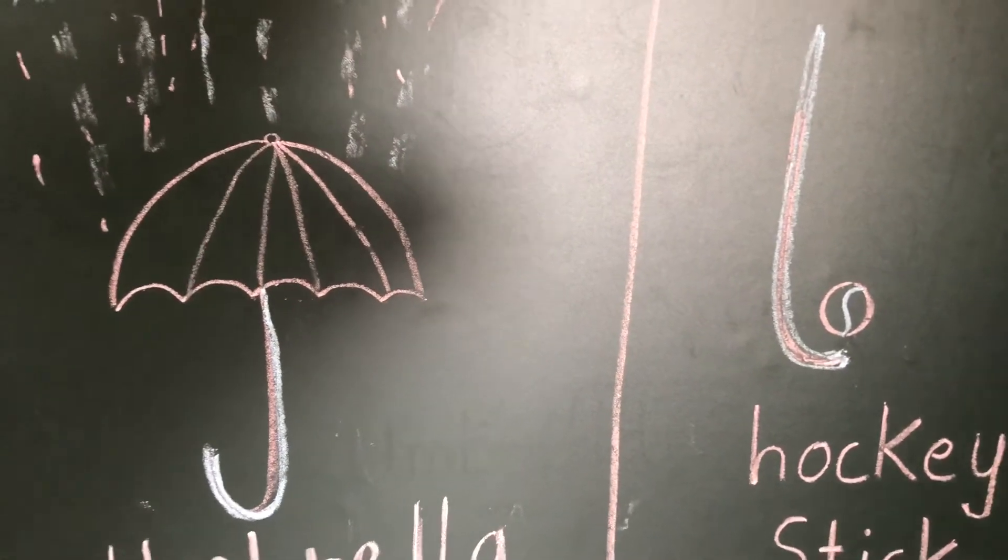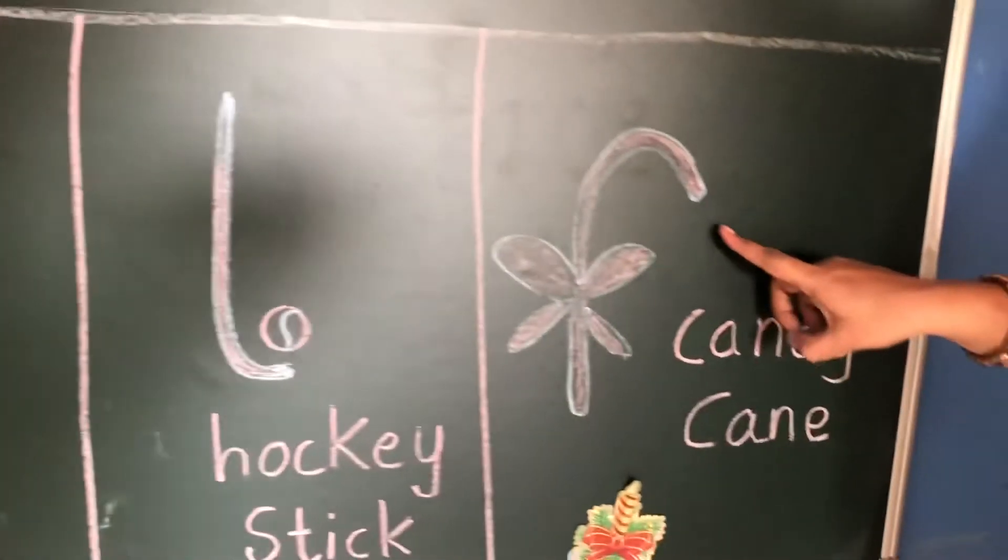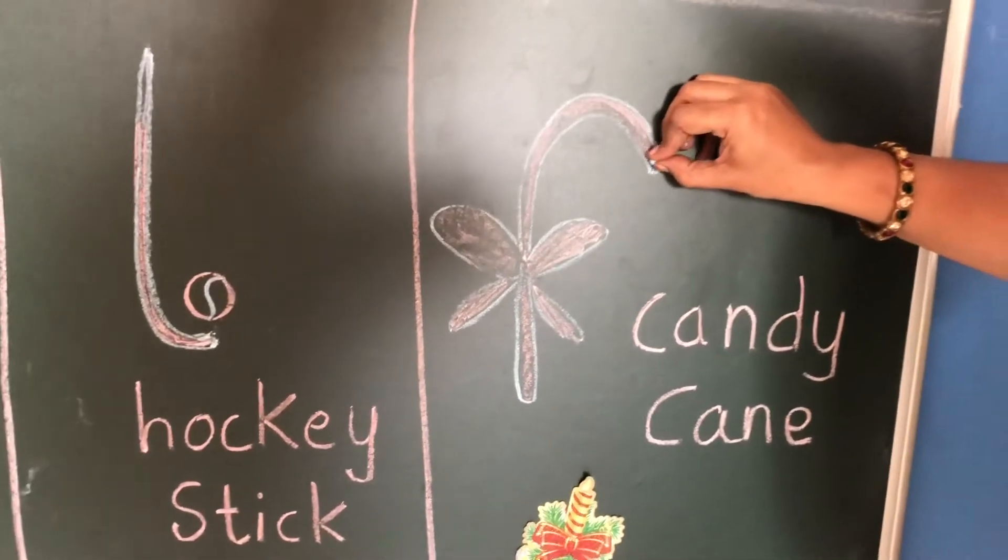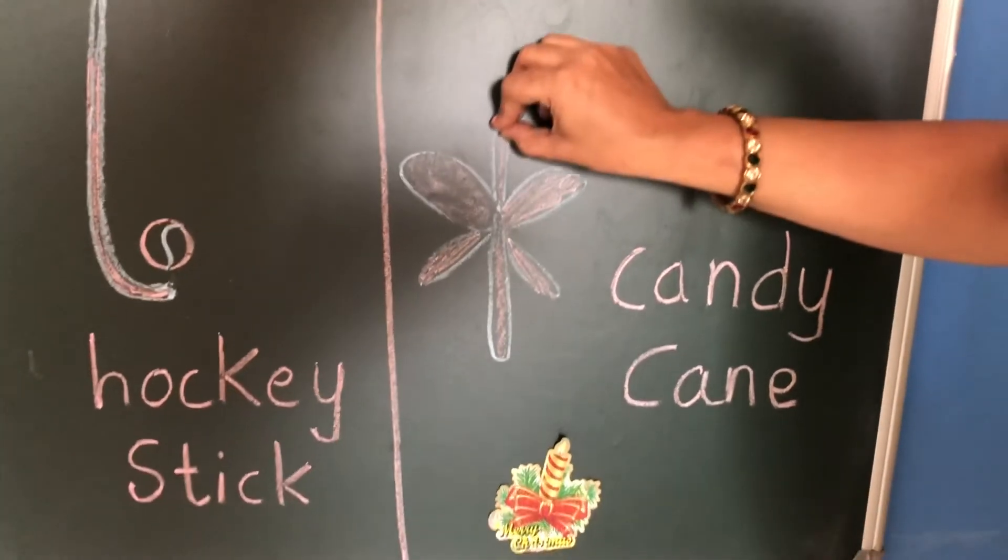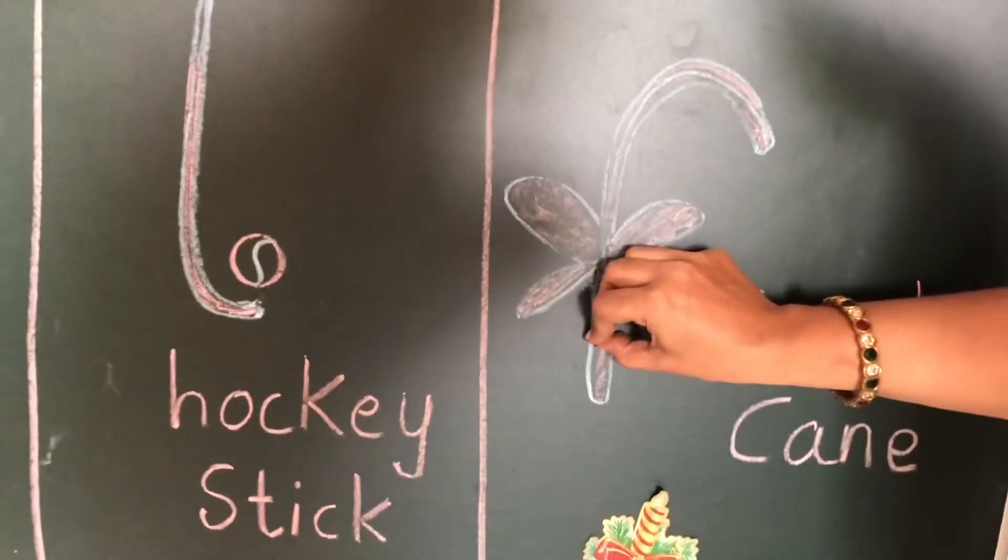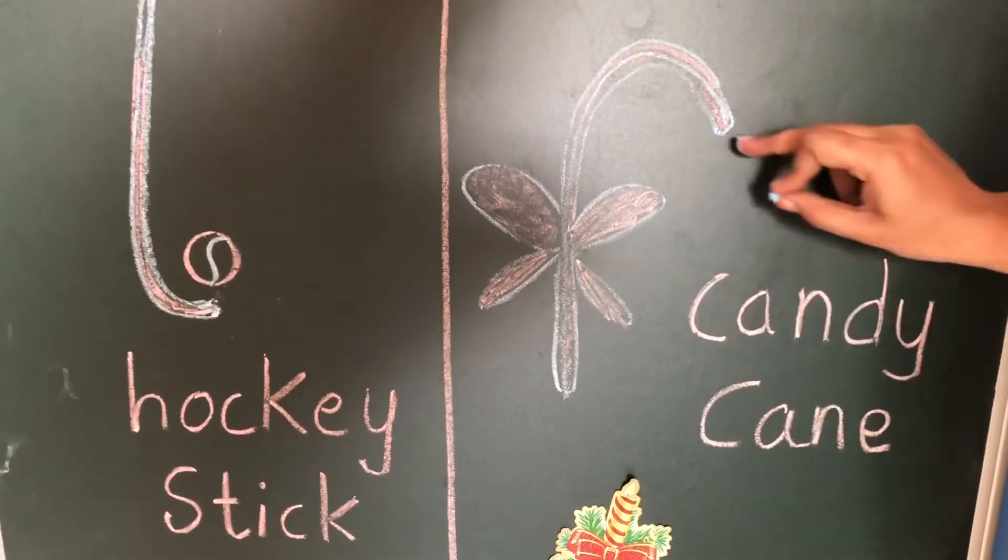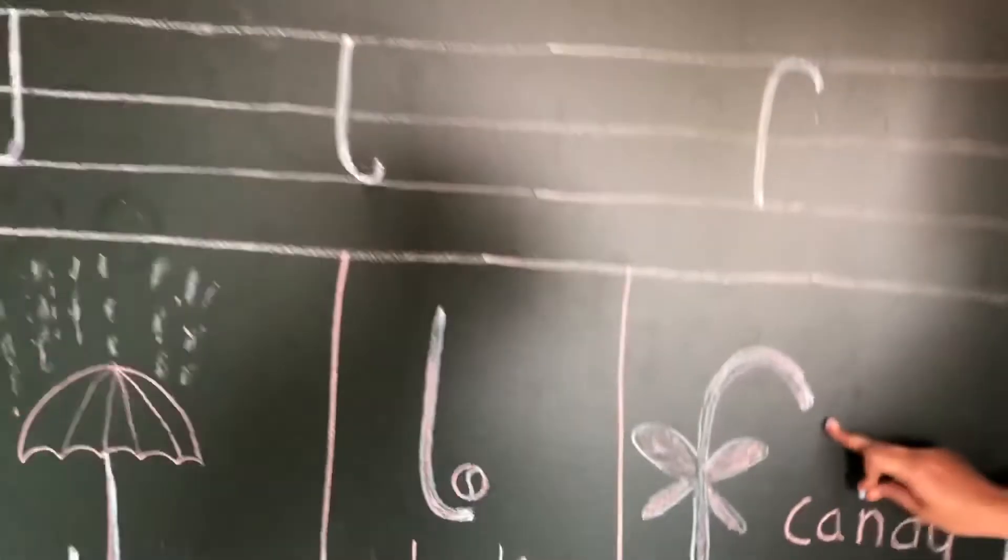It looks like a hockey stick, and the last is candy cane. It is starting from the top. What is a candy cane? You must have seen it at Christmas time. See, this is a candy cane.